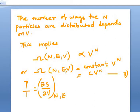Now, we know there are N number of particles, they can be distributed in many ways. The number of ways the particles are distributed depends on the volume of the enclosure. So here, Ω(N,E,V) will be proportional to V^N. We can write Ω(N,E,V) = constant V^N = CV^N.